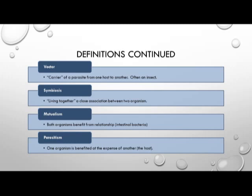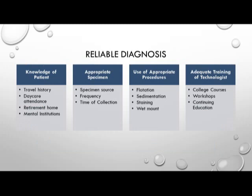Symbiosis means living together in a close association between two organisms. Mutualism is when both organisms benefit from the relationship — a good example is intestinal bacteria that resides in the human gut. Parasitism is when one organism is benefited at the expense of another, which is the host.